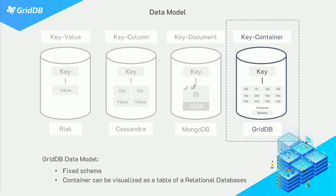Next up is key-document. It's kind of like key-value in that the key points to a value, but this time the value is a document — some kind of complex data structure like JSON or XML. Examples include MongoDB and Couchbase. These are very easy to use because there's no schema at all. A lot of times people say that NoSQL databases are schema-less, but that's not true for all of them — it's mostly true for MongoDB, which is the most popular NoSQL database at the moment. Since there's no schema, it's very easy to insert new data because it's flexible that way.